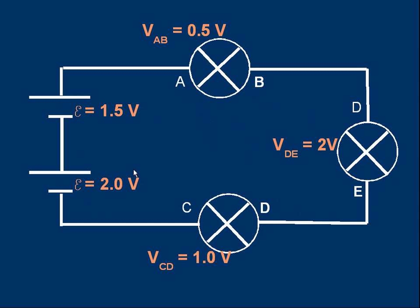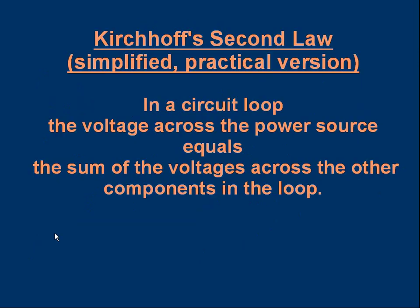That's the principle: whatever the EMF is, the voltages of the components in the circuit loop add up to the same value. This gives us a way of stating Kirchhoff's Second Law. As a simple practical definition useful for solving problems: in a circuit loop, the voltage across the power source equals the sum of the voltages across the other components in the loop. So the voltage across the battery equals the sum of the voltages across all the other things in that loop.